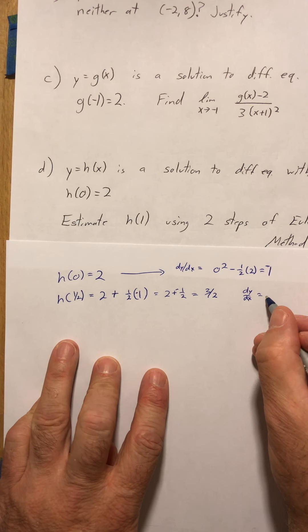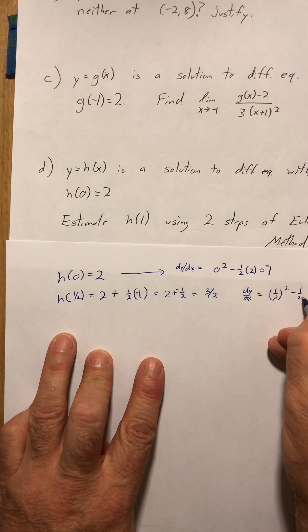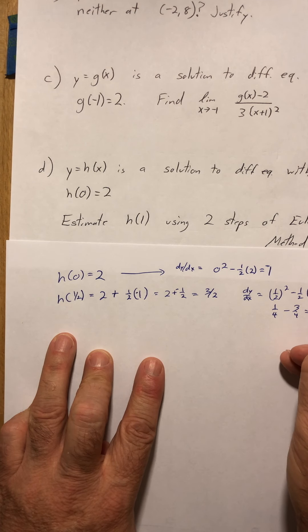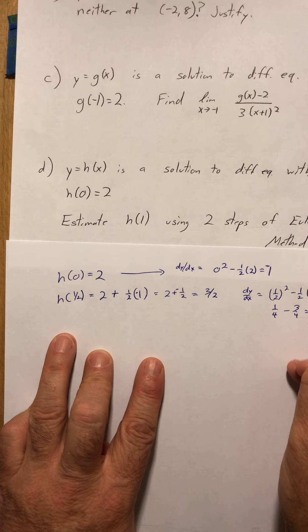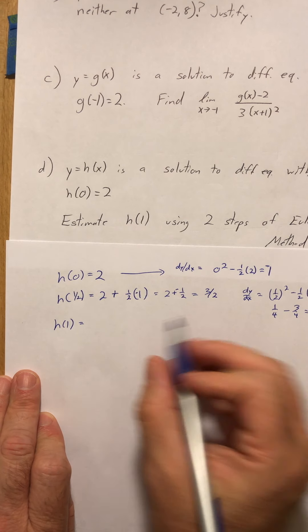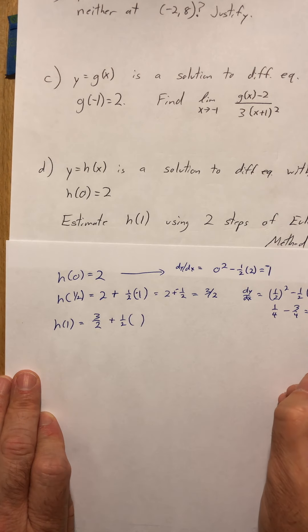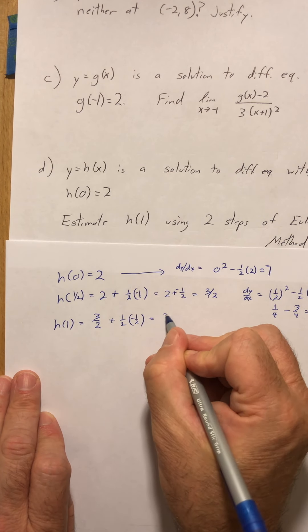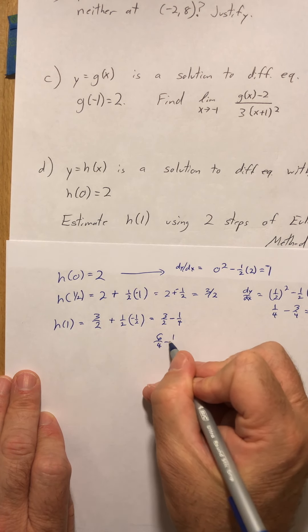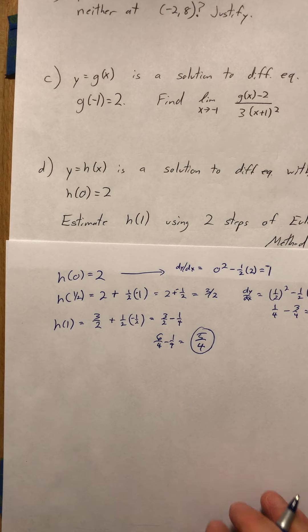Now I find the slope at 1 half, 3 halves: that's 1 half squared minus 1 half times 3 halves, which is 1 fourth minus 3 fourths, which is negative 1 half. Then H of 1 is the last y value, 3 halves, plus step size 1 half times slope negative 1 half. That gives 3 halves minus 1 fourth, which is 5 fourths. So 5 fourths is the answer.